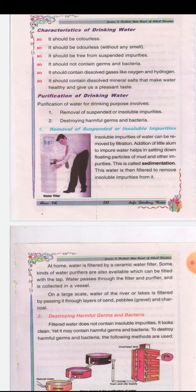First, let's read about the removal of suspended or insoluble impurities. Insoluble impurities of water can be removed by filtration. Addition of a little alum to impure water helps in settling down floating particles of mud and other impurities. This is called sedimentation. This water is then filtered to remove the insoluble impurities from it.